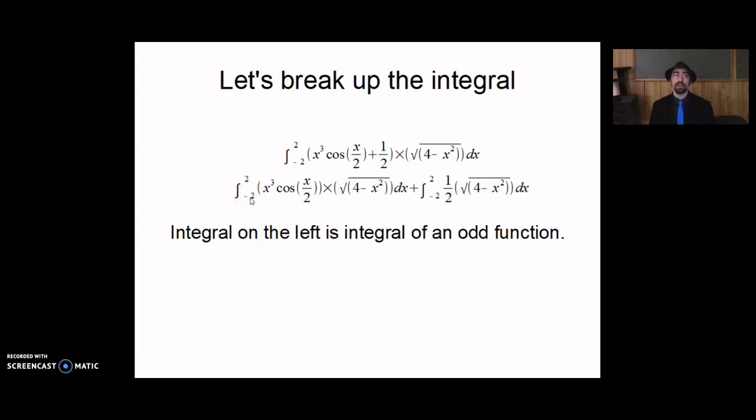across an interval that is symmetric about x equals zero. So whatever's happening from negative two to zero is exactly cancelled by whatever's happening from zero to two. So this whole integral is just a great big zero, which means we can pretend it's not there. Zero plus something, we just pretend that the zero isn't even there.